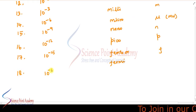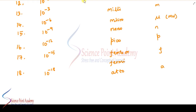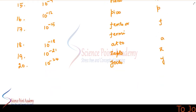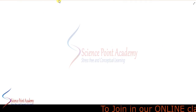10 power minus 18 is atto, symbol small a. 10 power minus 21 is zepto, symbol small z. 10 power minus 24 is yocto, symbol small y. So these are the powers of 10, their prefixes and symbols, which we should know very well. Next, let us see how to convert one power of 10 to another power of 10.